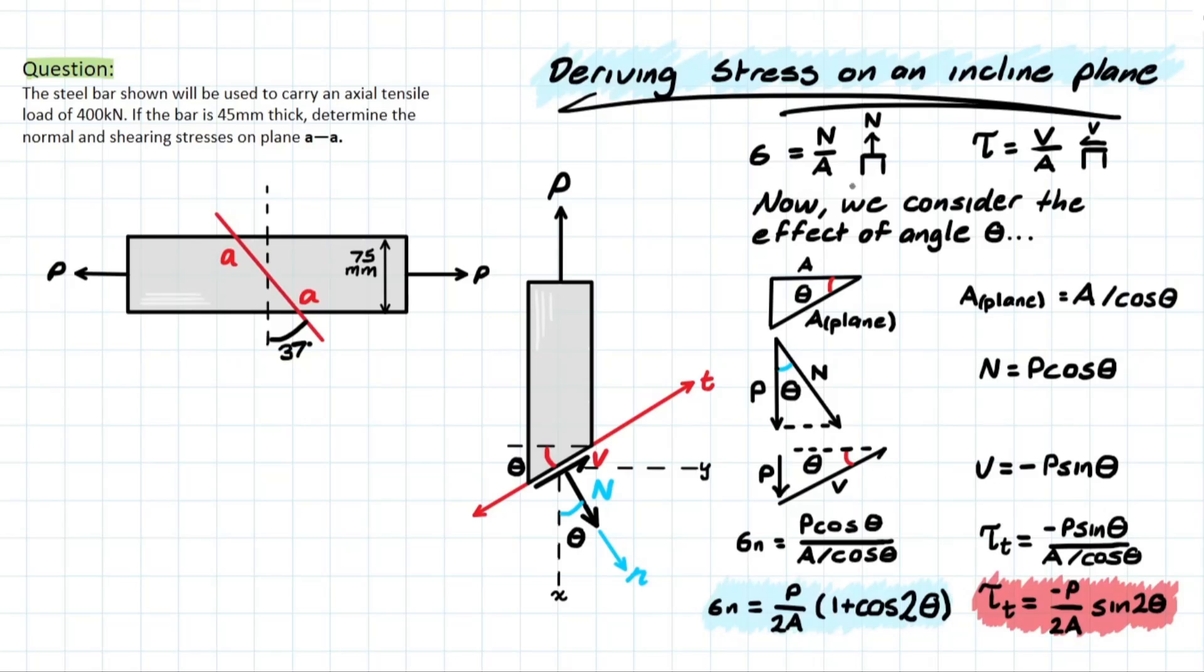Taking these formulas at the top can be brought down to derive normal force which is P cos theta over A divided by cos theta. And this is with respect to the normal axis, n lowercase. And then we have the shear force which is with respect to the t axis, which is once again parallel to that incline plane, we have negative P sin theta over A divided by cos theta.